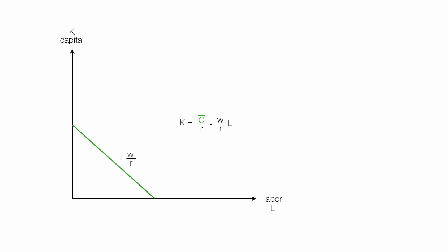You can see that negative W over R is the slope of that line. If I let L equal zero and substitute zero into the equation, labor is zero — what will capital be? That term cancels out, so capital equals C divided by R when labor is zero. That's the y-intercept: at that point, labor is zero and the amount of capital used is the total cost divided by the cost of capital.